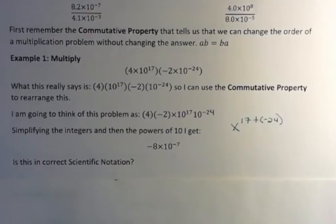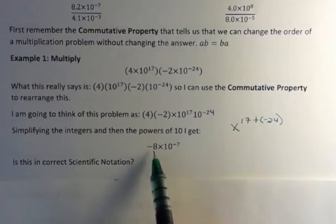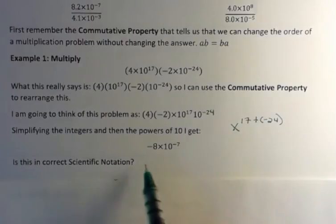Is this in correct scientific notation? In correct scientific notation, the absolute value of this number should be between 1 and 10, which it is, and our power should be some integer, which it is. So this is in correct scientific notation.